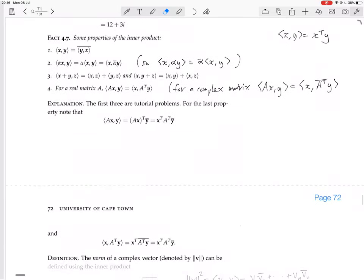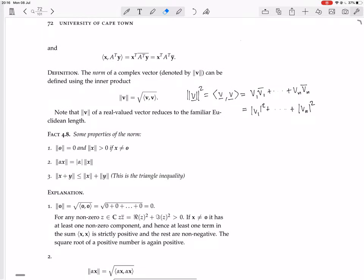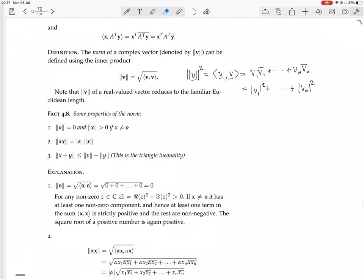So, where were we? We did the properties of the norm. The norm is the square root of the inner product of a vector with itself. That inner product is well defined as a real number, because the inner product of a vector with itself turns out to be a real number, a positive real number. So we have now some properties of norms.